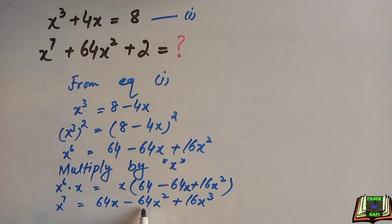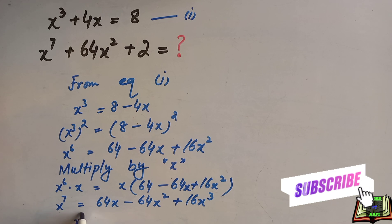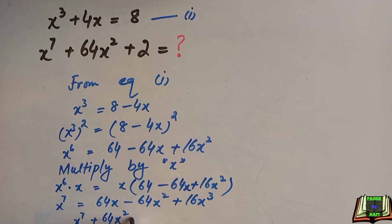In the next step, we'll move 64x² to the left side. Then we can write x⁷ + 64x² = 16x³ + 64x.